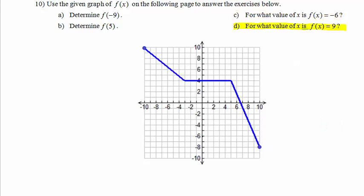In Part D, for what value of x is f of x equal to 9? So we are given the y-coordinate is 9. We are being asked to find x. So we go to 9 on the y-axis and look left or right until we find the graph. We look left and see it right here. So this point is the point whose y-coordinate is 9. What is its x-coordinate? Its x-coordinate is negative 9. So our answer, x equals negative 9.